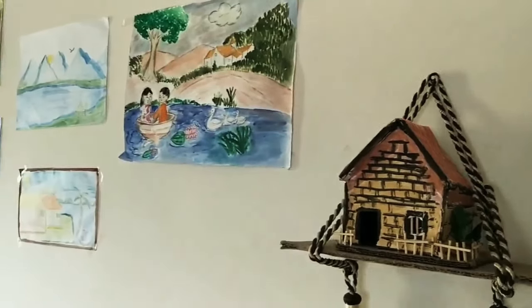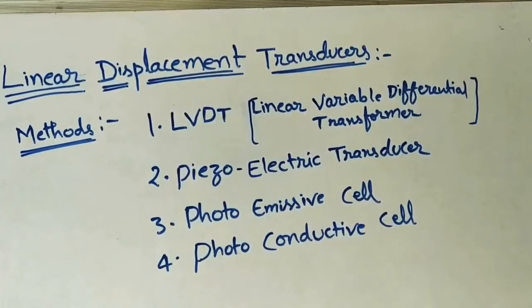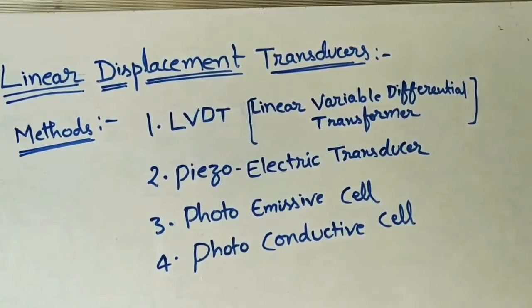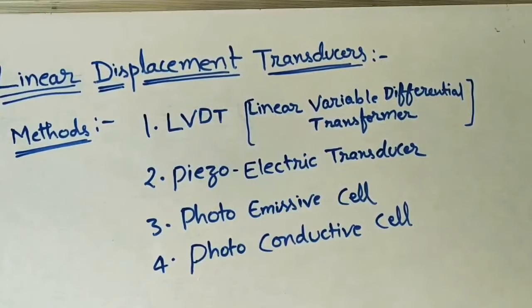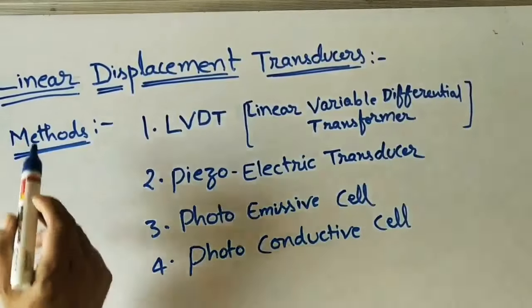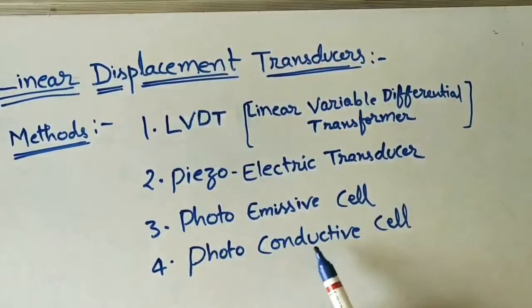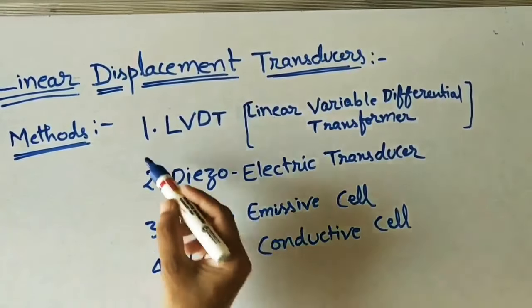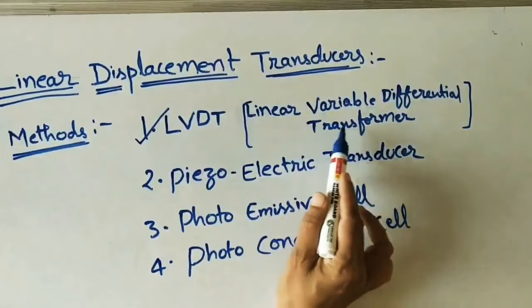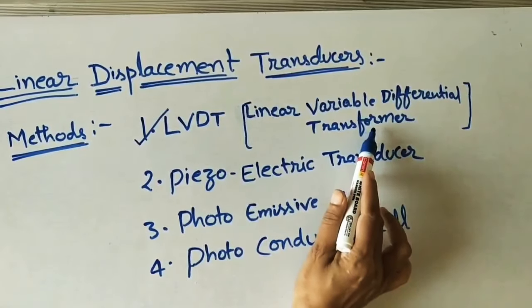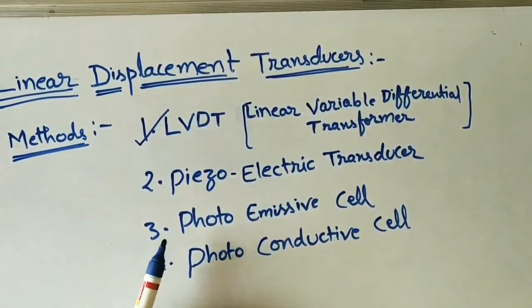Hello friends, welcome to my channel Mechanical Engineering Classes. Today I would like to explain the methods of transducers for finding linear displacement. The methods are: LVDT, piezoelectric transducer, photo emissive cell, and photoconductive cells. In the last class I explained LVDT — the linear variable differential transformer — and I will give you that video link in the description box. Today I will explain the next method: piezoelectric transducer.